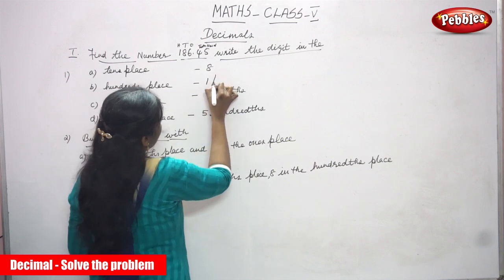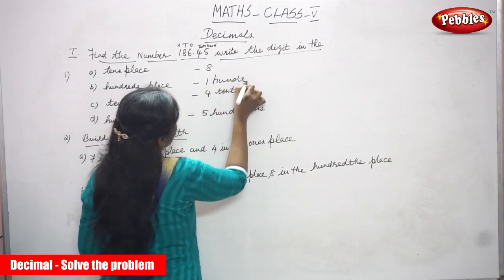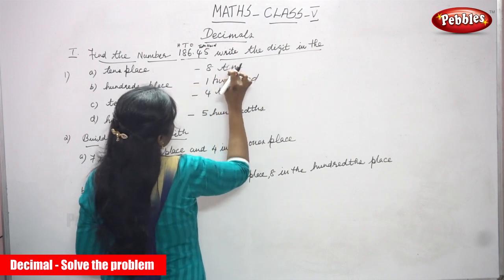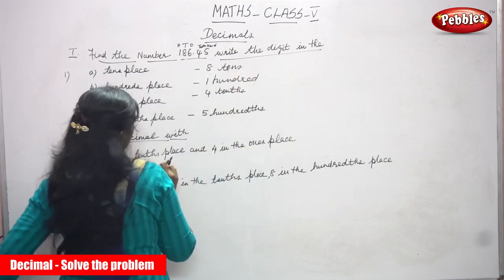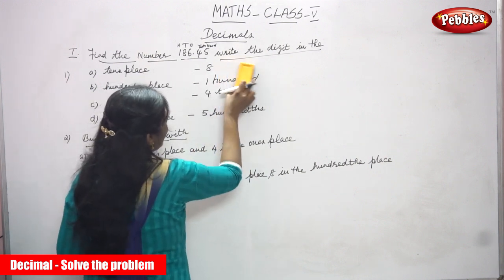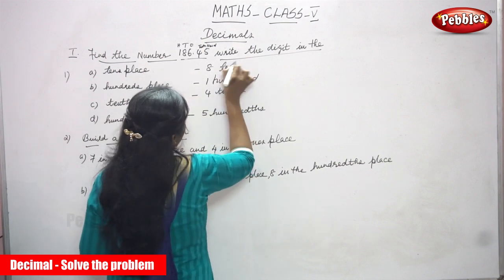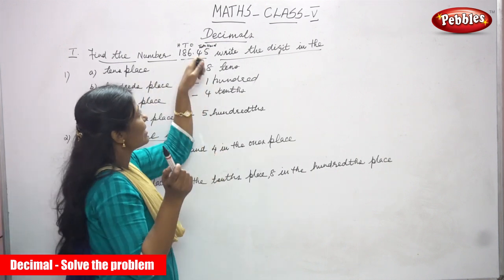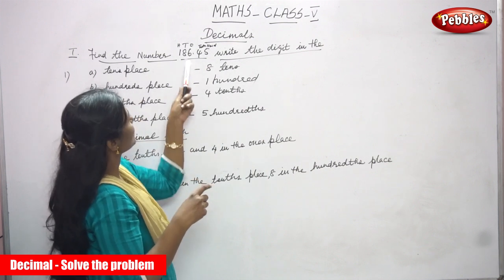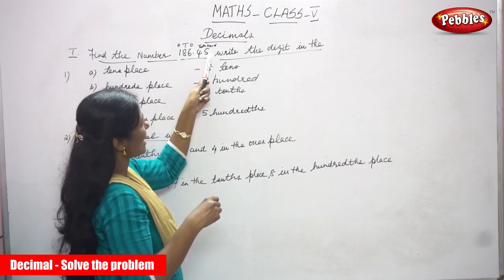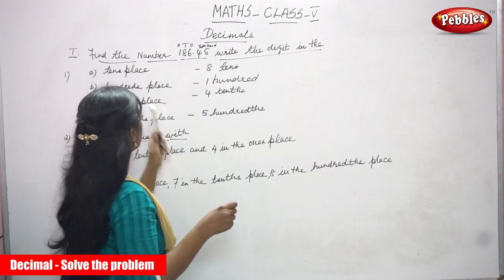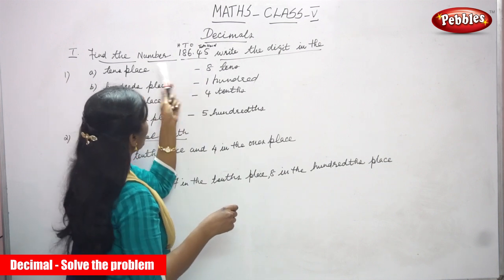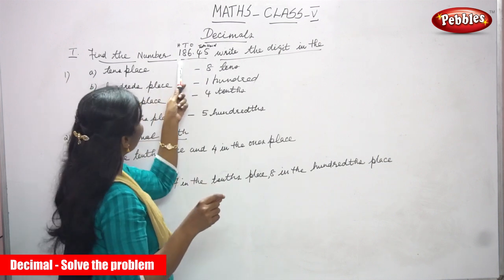So here, what is this? 100. And here, 8 tens. You just write only the numbers. Find the number 186.45. So this is in which place? It is 4 tens and 5 hundreds. So tens place — that is the whole part. This is the decimal part. So they ask the question in the whole part. So that is what you have written: 8 tens.